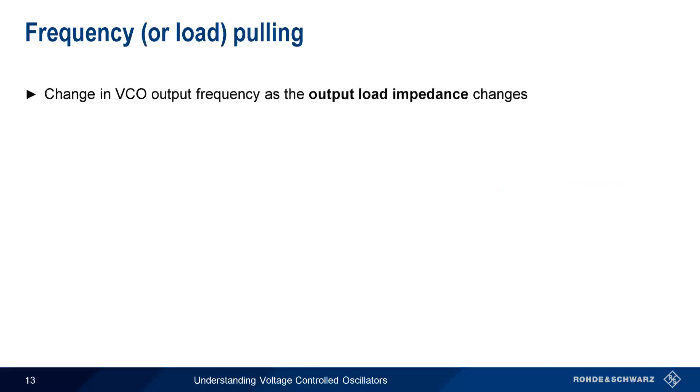The VCO output frequency can also vary based on the load impedance, and this is called frequency, or sometimes load, pulling. This is important because in many applications we can't guarantee that the VCO will always see a constant or see a matched load impedance.